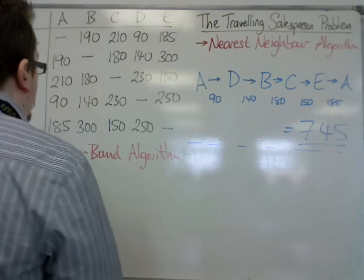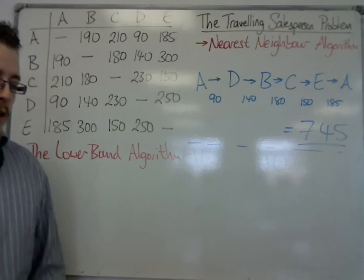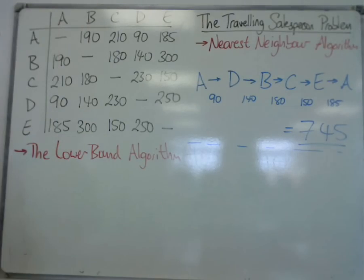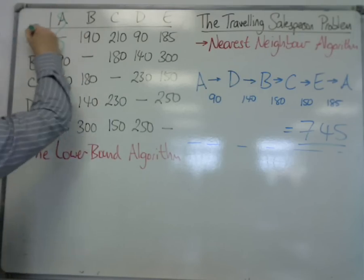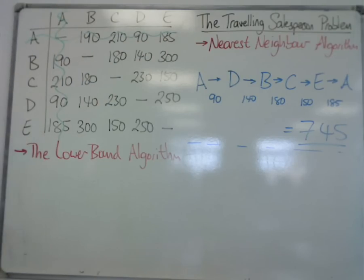For the lower bound algorithm, you will be told which vertex you need to delete. And in this case, we are going to delete A. So we're going to get rid of A, and then we're going to do Prim's on what is left.